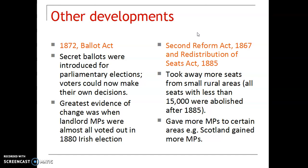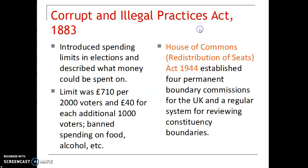Other major developments included the secret ballot. Up until 1832, votes were quite often held in a field with people simply raising their hands. Also, some people had more than one vote — that was finally abolished in the 1940s. For example, if you had a property in one constituency and a factory in another, you had more than one vote.